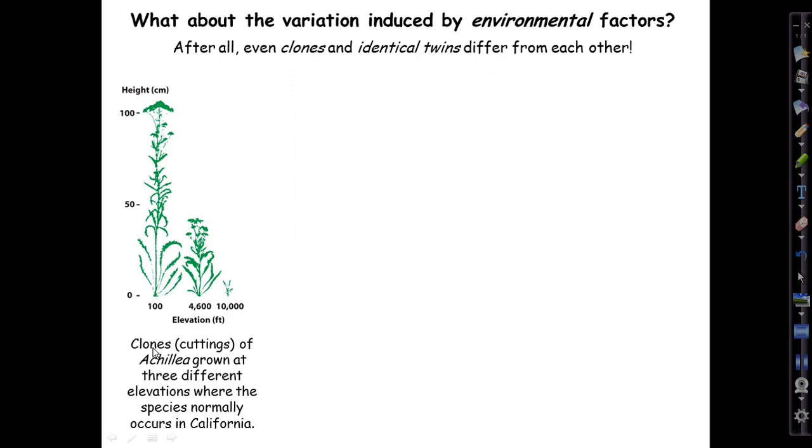Now, what about the variation induced by environmental factors? Even clones and identical twins differ from each other, of course. Here are cuttings of Achillea, yarrow, that were grown at different elevations in California where the species normally occurs. It's an identical genotype. Look at the differences in height of typical stems at Stanford near sea level, Mather in the Sierra foothills at 4,600 feet, and Treeline at 10,000 feet, where they can sort of survive but barely. A huge effect of the environment on the size of the plant.